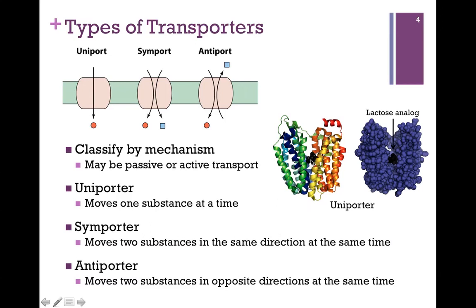You can see the lactose molecule in the center of all of those alpha helices. Secondly, we have symporters, which move two substances in the same direction at the same time. An antiporter also moves two substances at the same time, but they go in opposite directions. So this is just a matter of how many substances and in what direction.